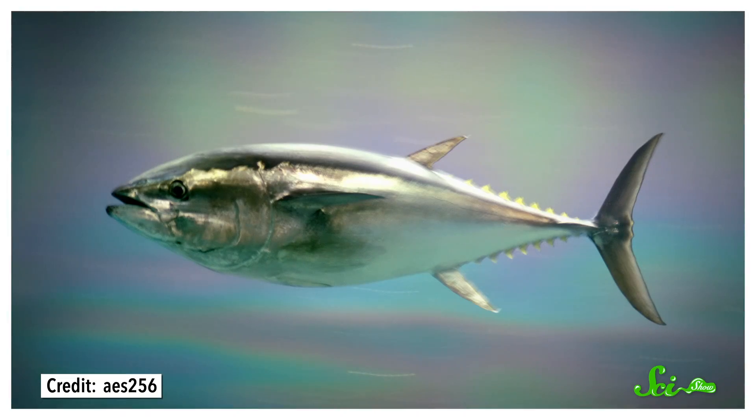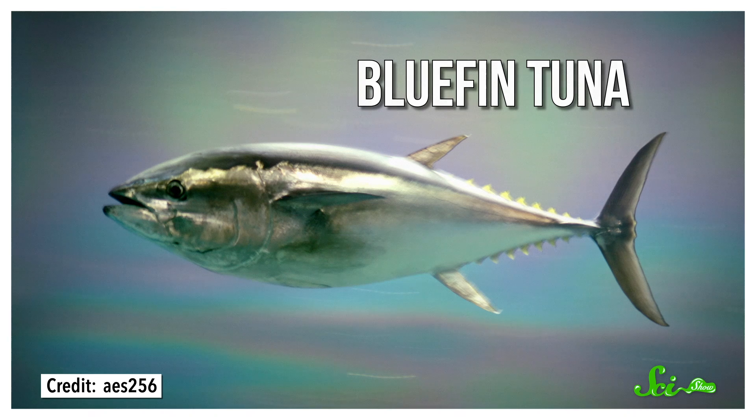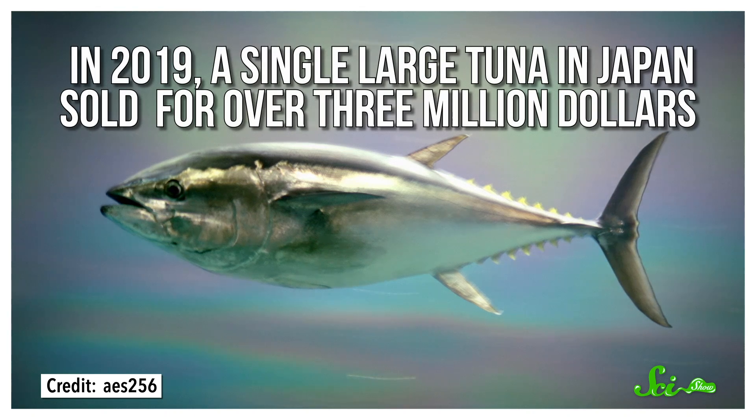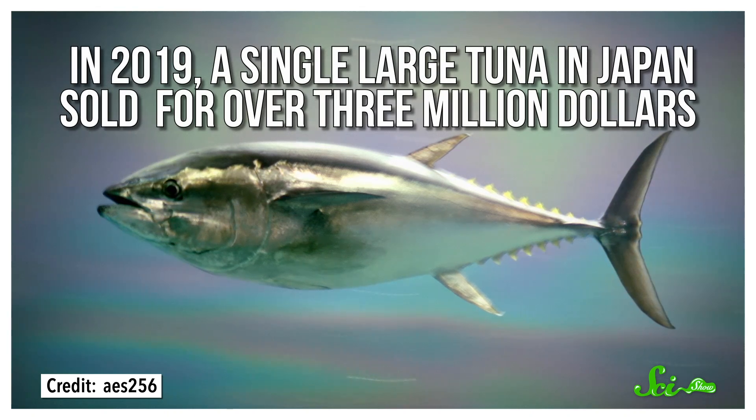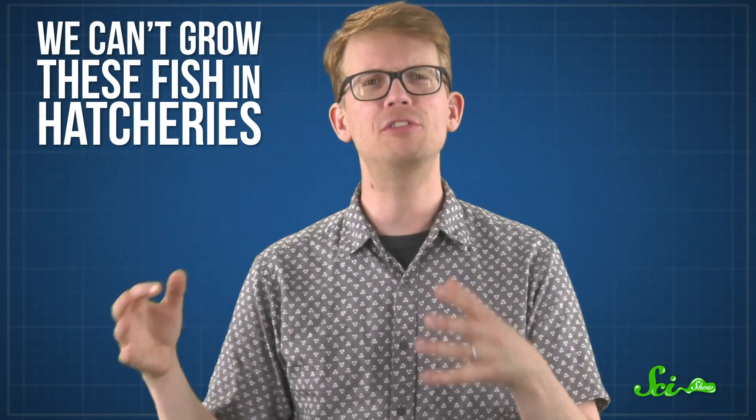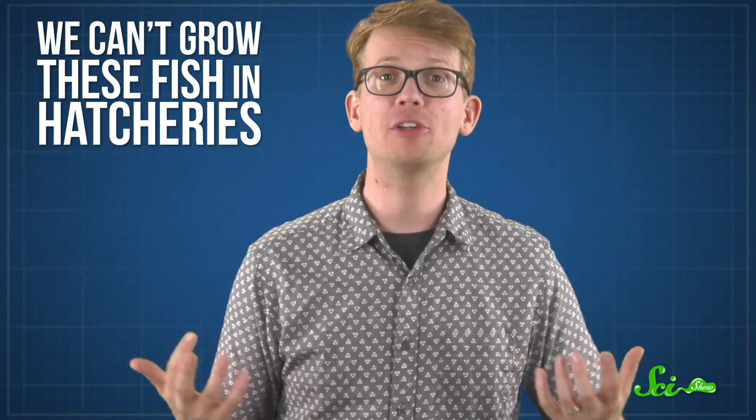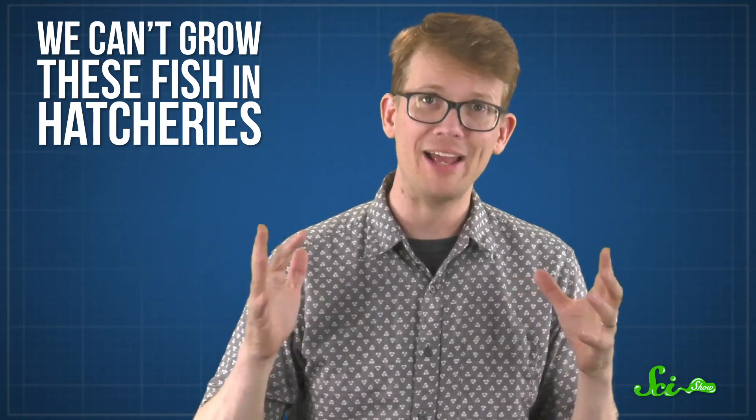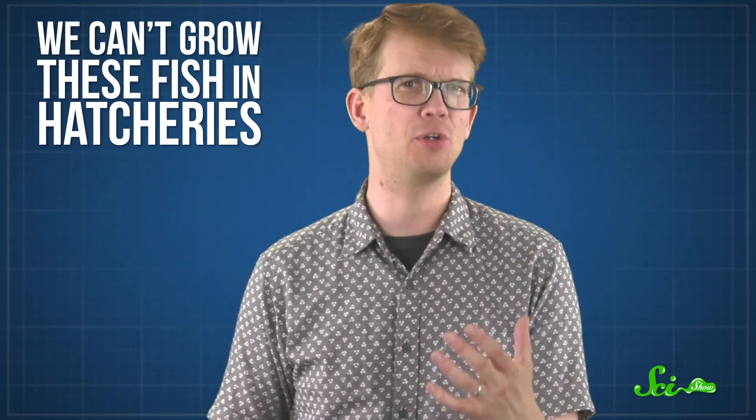And that's not the only luxury food product in high demand. According to sushi lovers, nothing beats the flavor of bluefin tuna. In 2019, a single large tuna in Japan sold for over three million dollars. Since these fish are only found in the wild, high demand has led to high prices and overfishing, landing the bluefin on the endangered species list. We can't grow these fish in hatcheries yet, because bluefin tuna have a complex life cycle making them very difficult to farm.